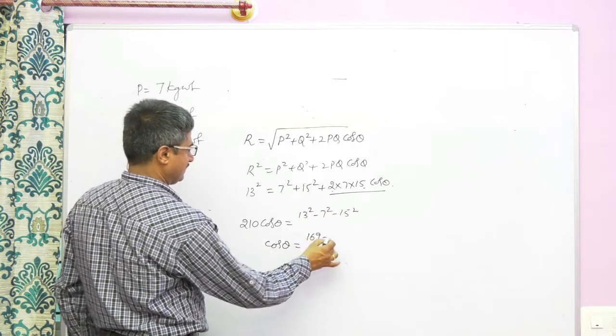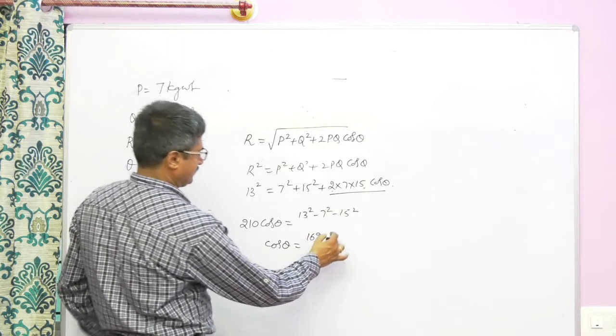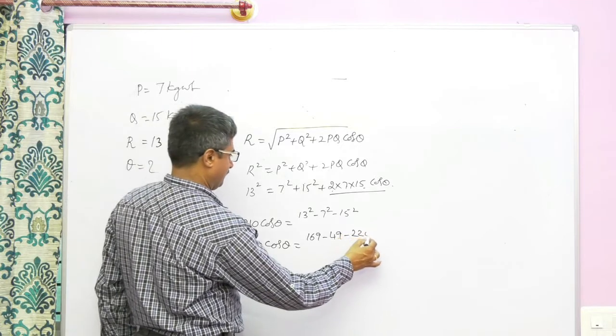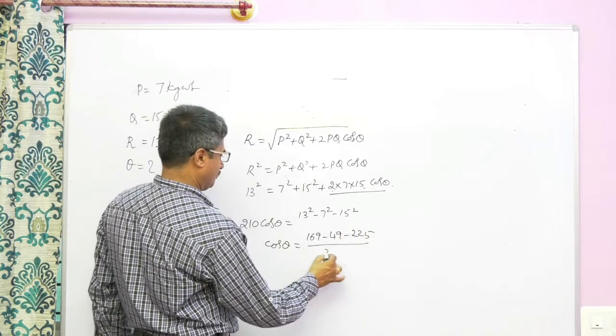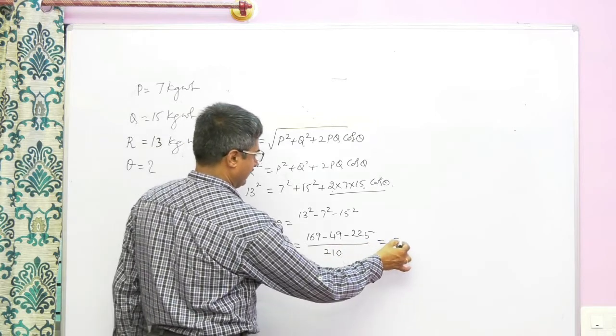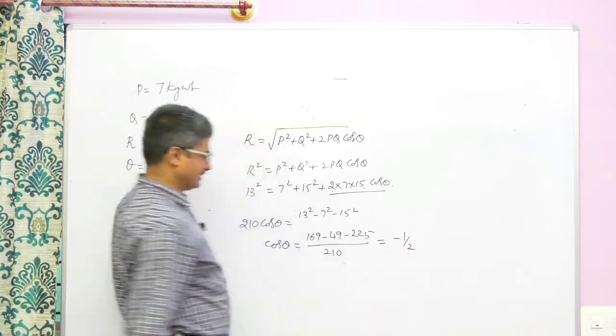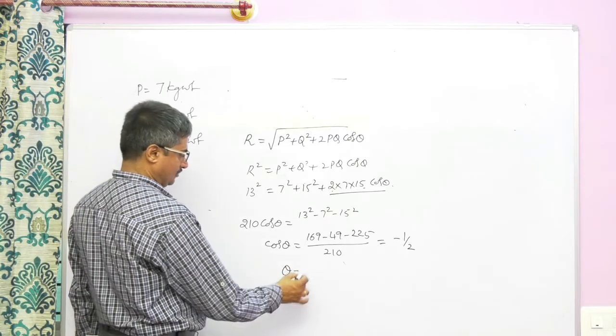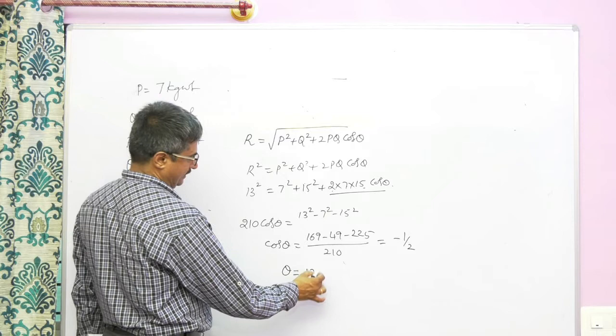169 minus 49 minus 15 square 225 divided by 210. This is minus half. If you simplify this, this comes out to be minus half. Therefore theta equals 120 degrees.